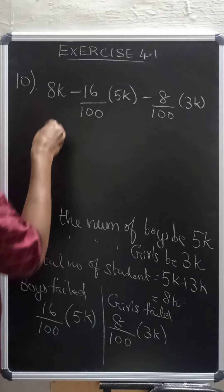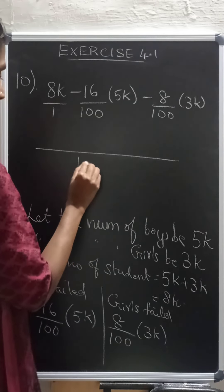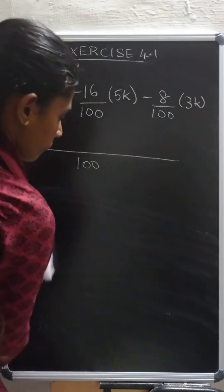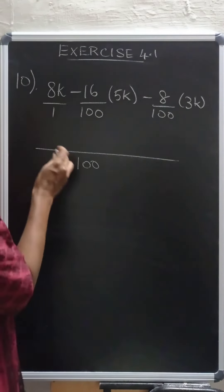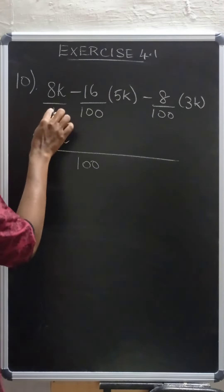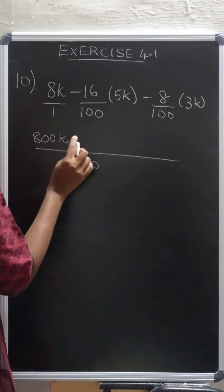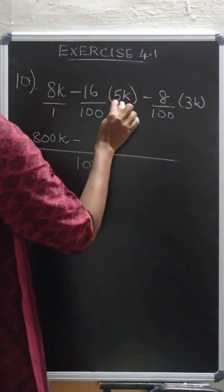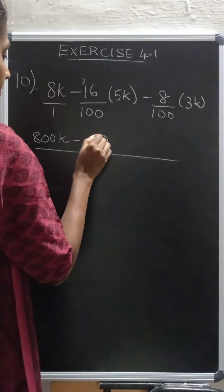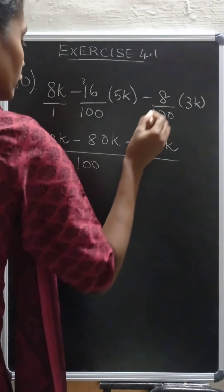Now solve this expression. Here, this is divided by 1. So we will take LCM. So here, 800k. I am taking LCM. 1 into 100. So here also, multiplying the numerator by 100. So 800k minus 16 into 5. 5 sixes are 30, 0 carry over 3, 5 ones are 5, 6, 7, 8.